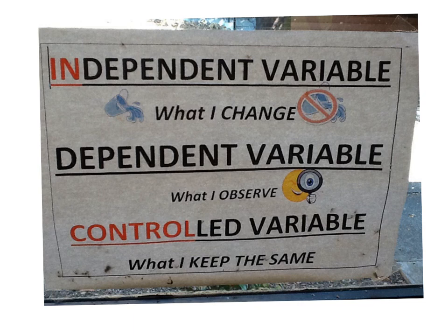The independent variable is the variable changed on purpose by the experimenter — so that would be you. We will try and keep experiments simple and usually only have one independent variable. However, in some circumstances there might be more than one.